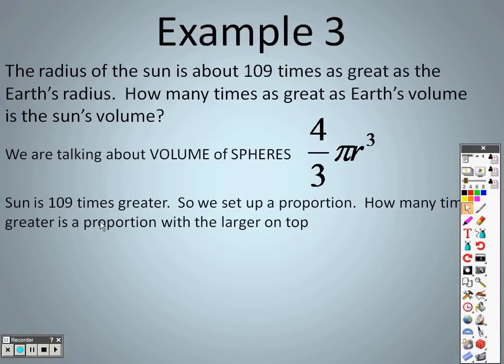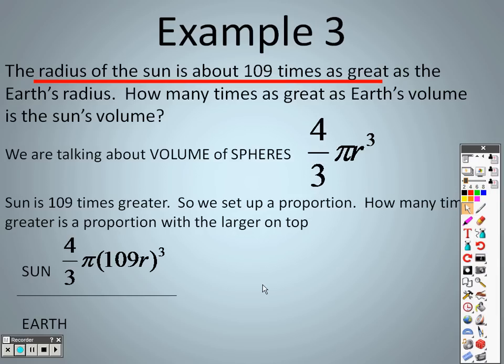So we're going to set this up. The one thing that we do know is that the sun is 109 times greater, so we can set up a proportion with the larger proportion on top. Obviously the sun's bigger, so let's put the sun on top. The radius of the sun is 109 times greater. So if the radius of the Earth was 1, then the radius of the sun would be 109. Basically what we're saying is whatever the radius or r is of the Earth, the sun is 109 times greater. Times meaning multiplication, so that's why I have 109 times r in here, because that's your radius. The Earth's radius is just r.